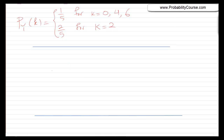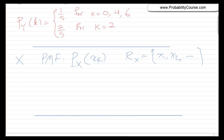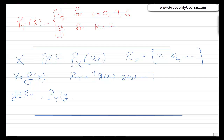Let's summarize our methodology. The basic problem was: I had a random variable X, I knew the probability mass function of X — px of xk — where the range of X is x1, x2, and so on. I was interested in finding the probability mass function of a random variable Y defined as g of X. We said we can first find the range of Y, given by g of x1, g of x2, and so on. Then we find the probability of each value in the range. For any Y in the range, we need py of y, which equals the probability that g of X equals y. Because we know the PMF of X, we can calculate this probability.